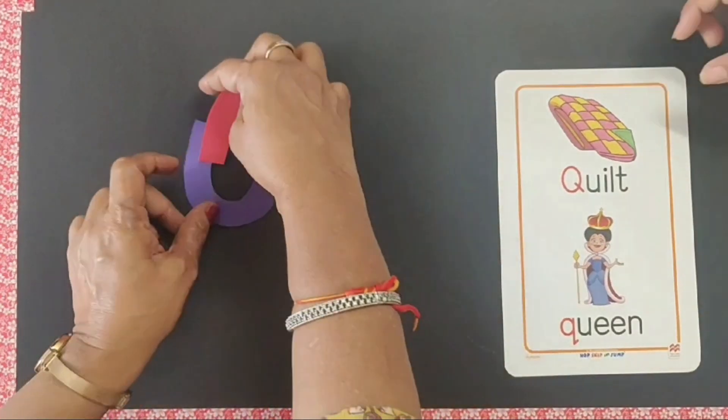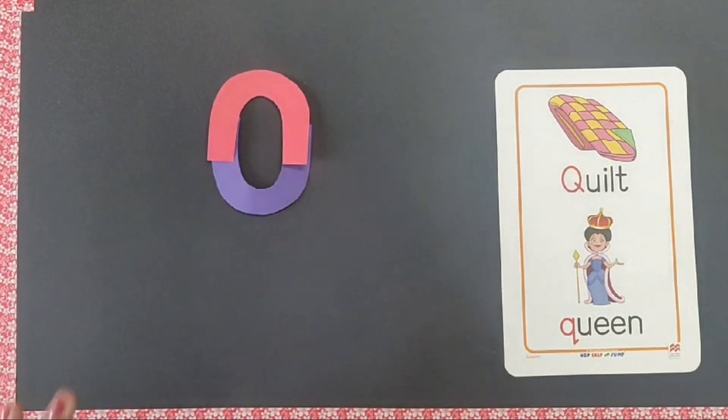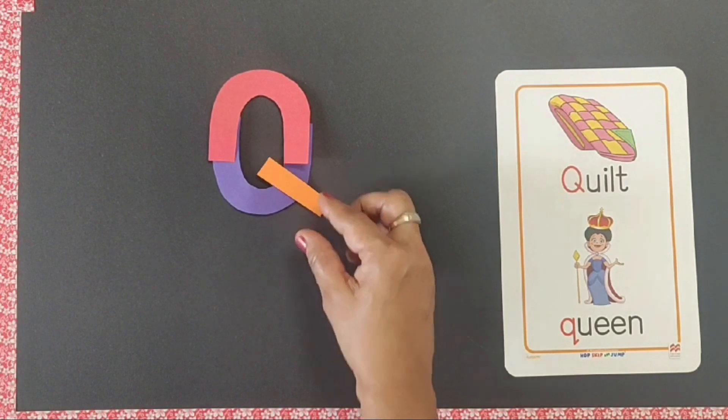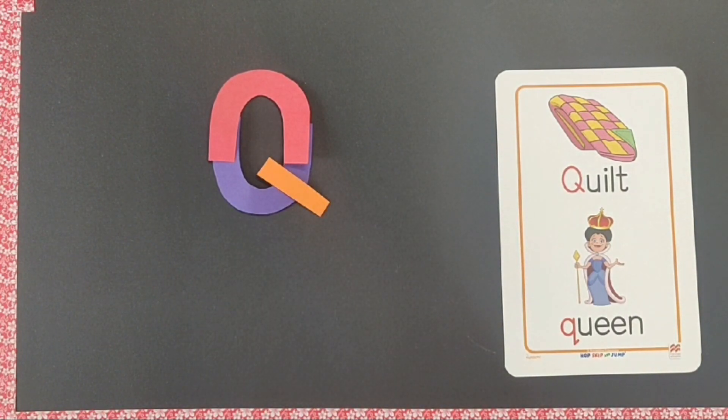Now again make an O, like this. Q. Q says kw, Q for quilt.